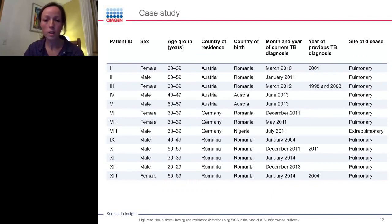Here I want to show an overview of the 13 patients included in the study. Five patients were living in Austria, three patients were living in Germany, and five patients were living in Romania. Four patients had a previous diagnosis of TB.